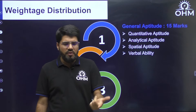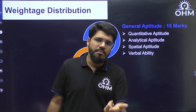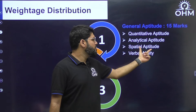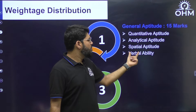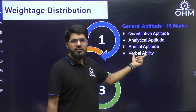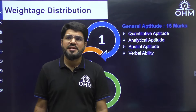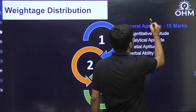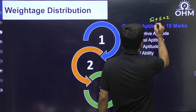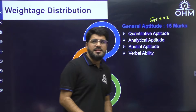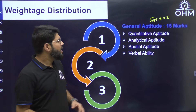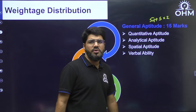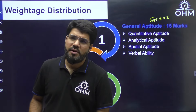So how many questions are in General Aptitude? It is 15 marks: five questions of one mark and five questions of two marks — five into one plus five into two — making 10 questions total. Roughly three questions come from spatial and verbal combined, while six to seven questions are from quantitative and analytical aptitude only.